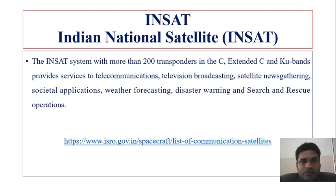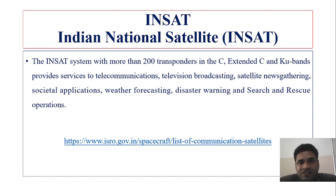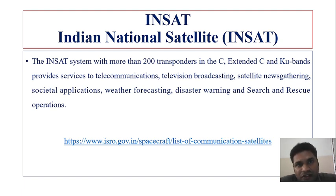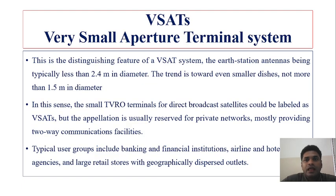The INSAT systems have more than 200 transponders operating in C-band, Extended C-band, and Ku-band frequency bands. These provide television broadcasting, news gathering, and weather forecasting — which is very helpful for agriculture and fishermen. INSAT is also used in disaster warning, rescue operations, and search and rescue operations in remote locations of the nation.